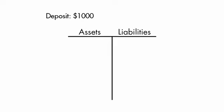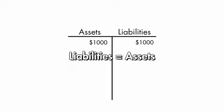When you deposit your $1,000, the bank now has an extra $1,000, so the amount gets added under Assets. But to the bank, this $1,000 is also a liability, since at any time you can come and get your money, write a check, or make an ATM withdrawal. The accounting concept at play here is that liabilities always equal assets.